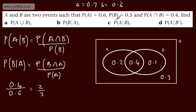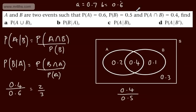The probability of A given B: using the formula, it's the intersection, which is 0.4, divided by the probability of B, which is 0.5. That gives us 4 fifths, which is 0.8.